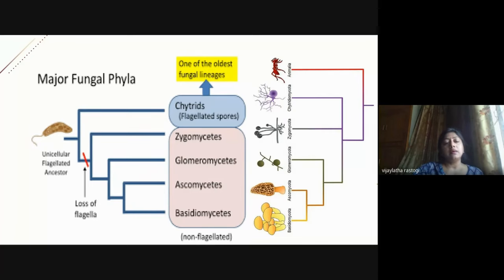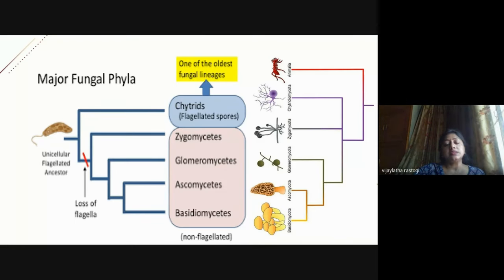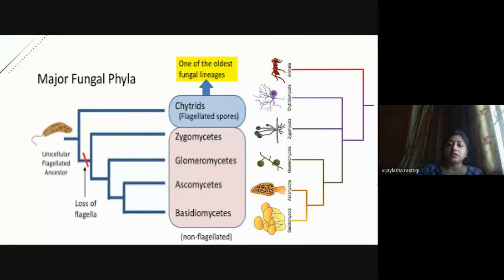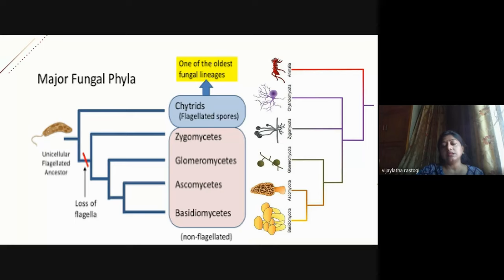Classically, fungi have been divided into five phyla, recently updated to nine. Medically important fungi fall under these phyla. The oldest are the chytrids, which have flagellated spores. From them separated the zygomycetes, which include agents of COVID-associated mucormycosis. The glomerulomycetes include saprophytic fungi living on decaying plant matter that are also of medical importance.